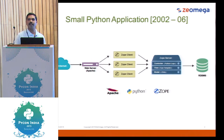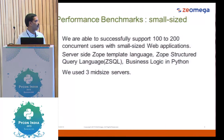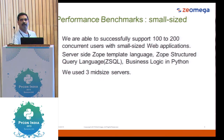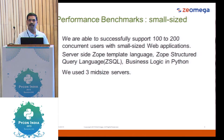Today you can start small using Django, Pyramid, or CherryPy. Starting small helped us successfully support 100 to 200 concurrent users. We used a server-side job template language, server-side SQL, and relied heavily on Python business logic. We were able to scale to 100 to 200 users using three mid-size servers. This is how we survived in the business between 2002 and 2006.